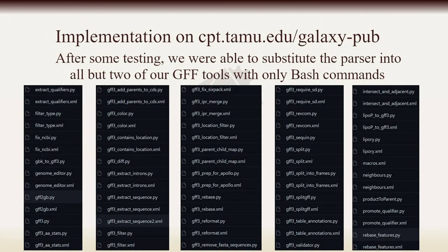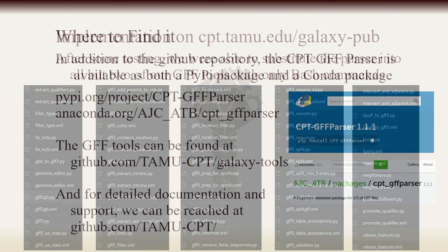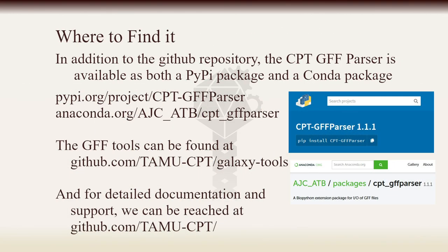In practical terms, our internal rollout was a success. After some initial testing, we were able to replace our old parser with the new one in all but two of our 50-odd tools, using nothing more than bash commands to substitute the relevant imports in our Python scripts. Initially released as a PyPI package, we are also pleased to announce that the parser is now available as a Conda package to more smoothly integrate it within Galaxy Tool XMLs.